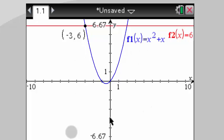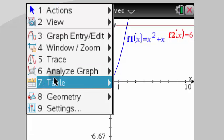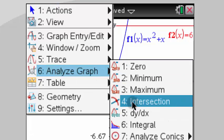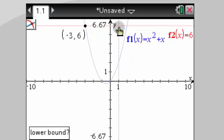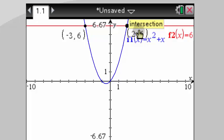So let's get the right side. So I'm going to do this again, menu, analyze graph, intersection. So I want to get that point right there. So I go left of it as my lower bound, sweep right to get my upper bound. And again, you can see that I have an intersection point.